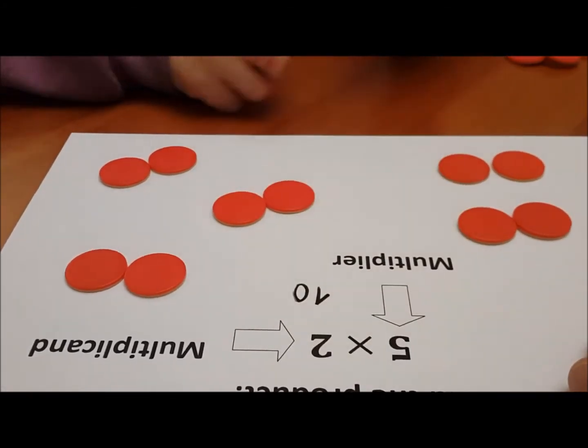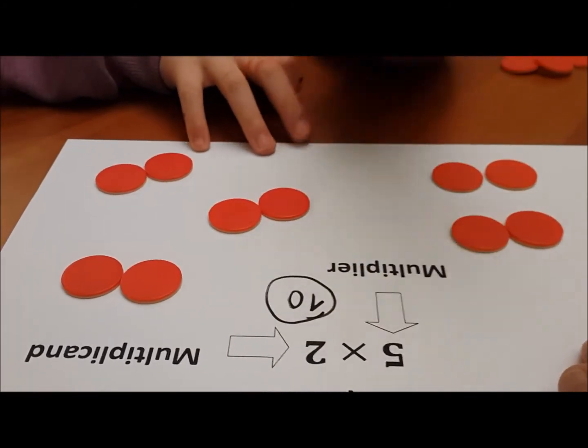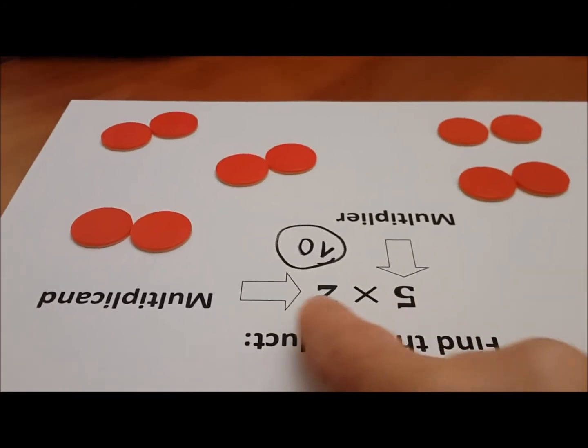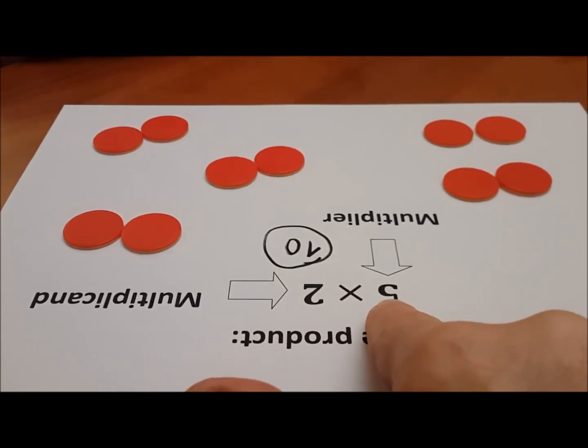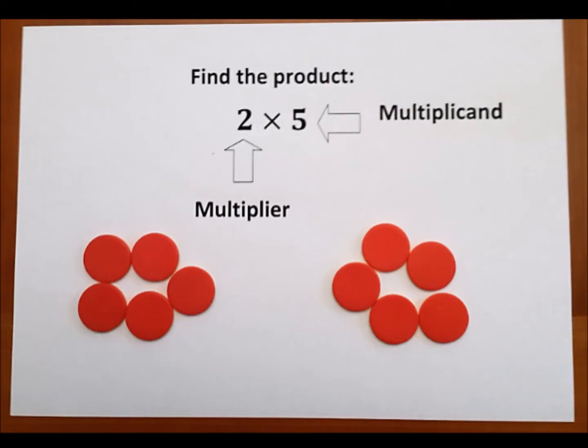You could just circle that. So five times two means five sets of twos. The first number is the multiplier, the second is the multiplicand. On the other hand, if the multiplier is two and the multiplicand is five, we then need two sets of five. This answer is also ten.